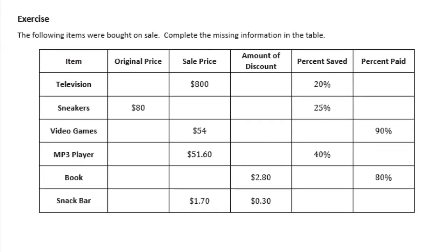Exercise: the following items were bought on sale. Complete the missing information in the table. The table gives us a bunch of items and we need to figure out the original price, sale price, amount of discount, percent saved, and percent paid.